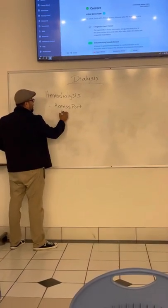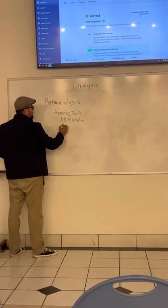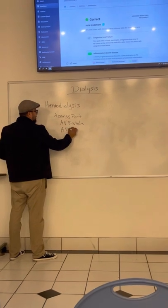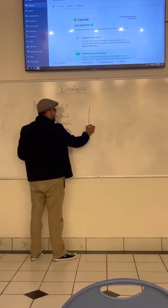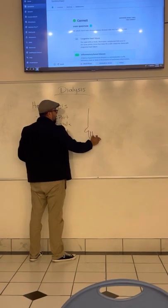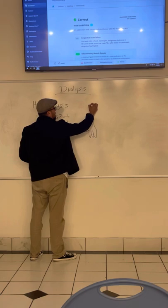And so we have either an arteriovenous fistula, or we have an arteriovenous graft. And what that is, if you can imagine the arm, you have an artery, you have a vein. You have an artery, you have a vein.